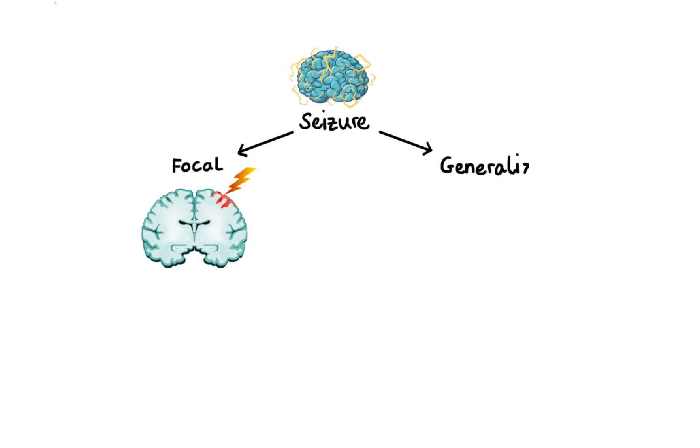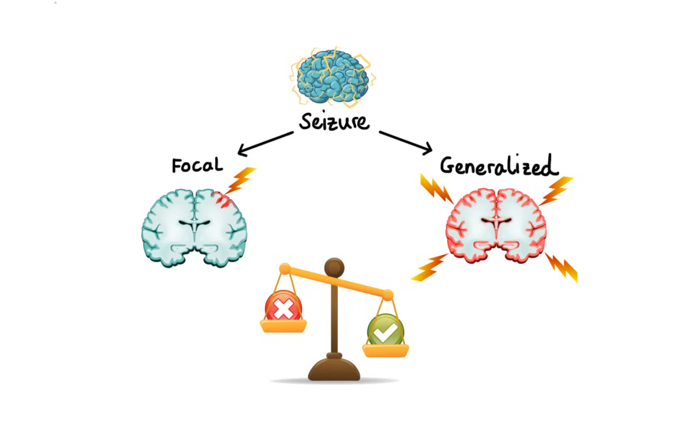Second, generalized seizures affect both sides of the brain at the same time and almost always cause loss of consciousness. Now simplistically, seizures can be viewed as the result of an imbalance between inhibitory and excitatory processes in the brain that produces either too little inhibition or too much excitation.